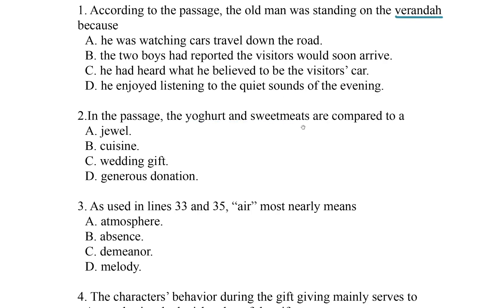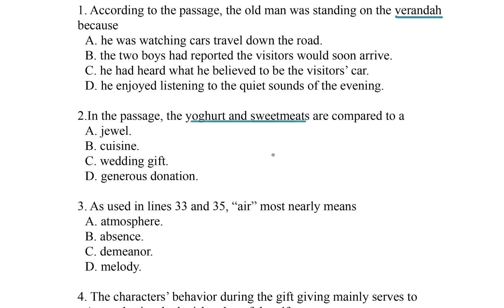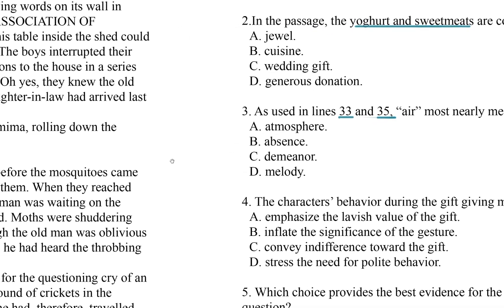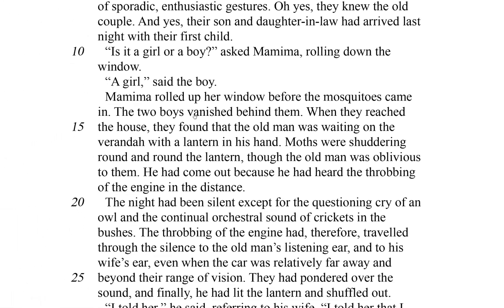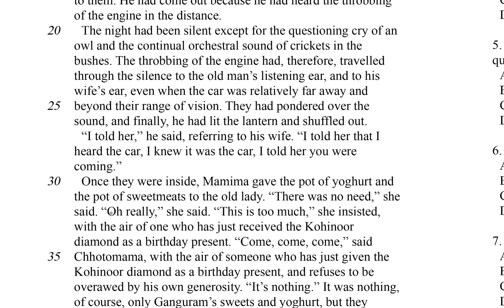Question two: in the passage, the yogurt and the sweetmeats are compared to... This is another keyword kind of question. So as we go through the passage, we'll be looking for mentions of yogurt and sweetmeats. Question three: as used in lines 33 and 35, 'air' mostly means... We dip over to the passage and look for lines 33 and 35.